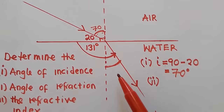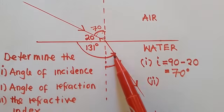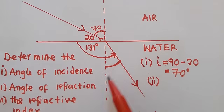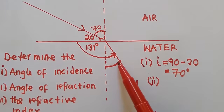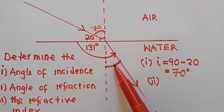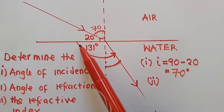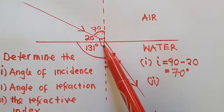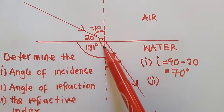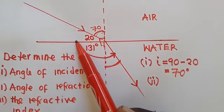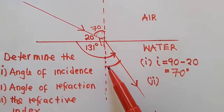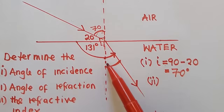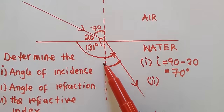We are given the whole angle from one side to the refracted ray as 131 degrees. There is a 90-degree right angle from the surface to the normal, so from here to there is 90 degrees. To find just the angle of refraction, we say 131 minus 90 degrees.